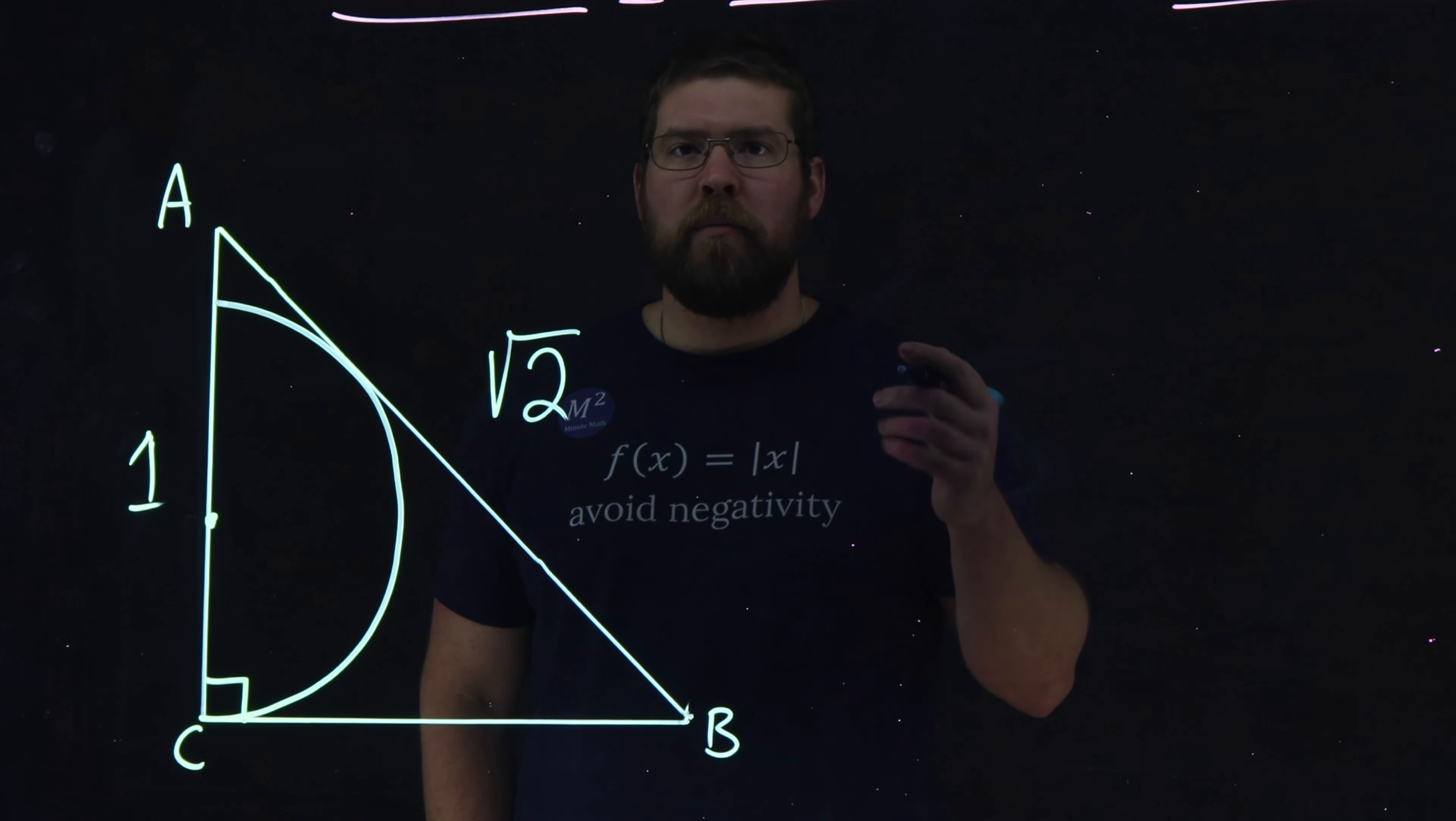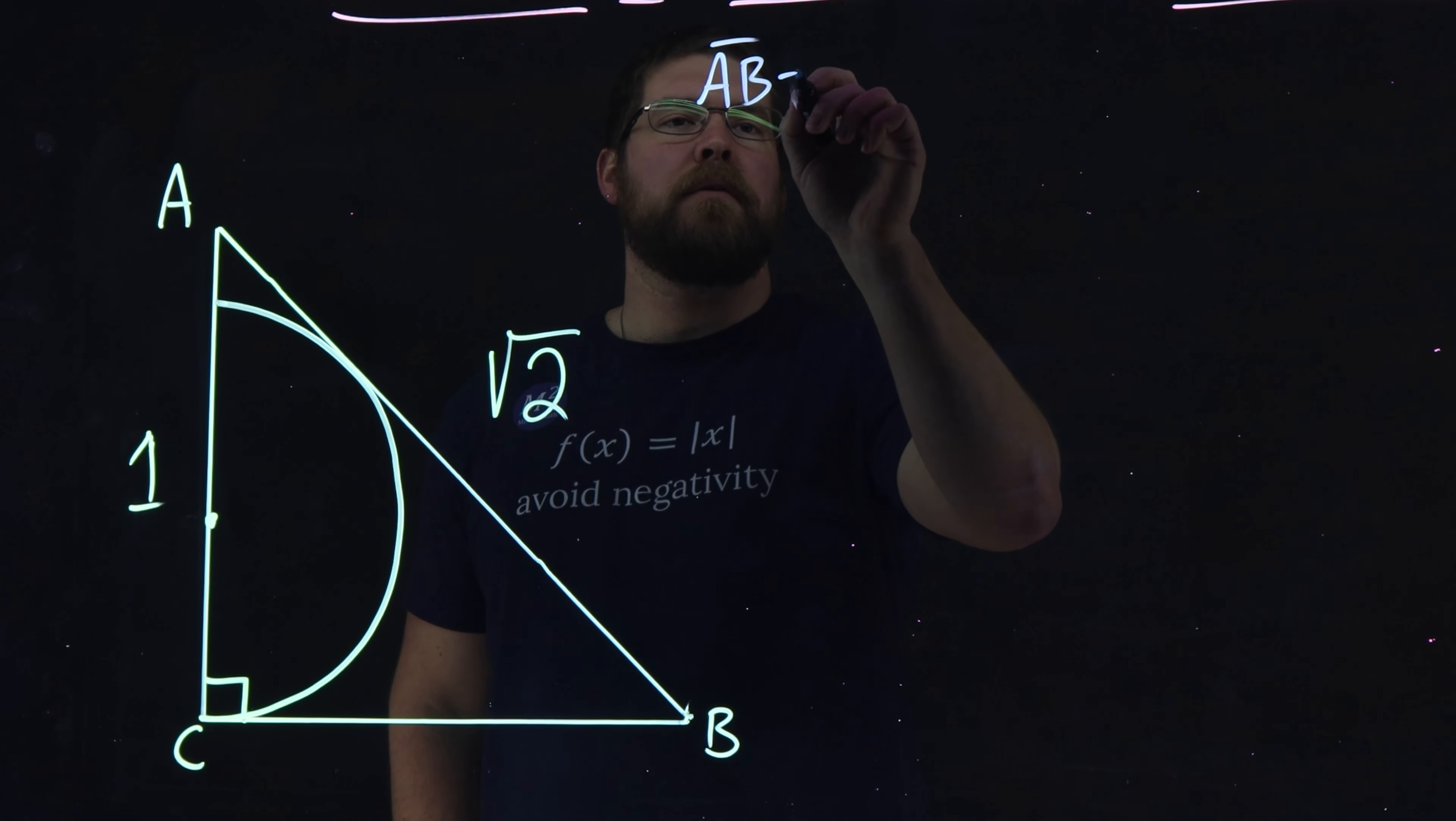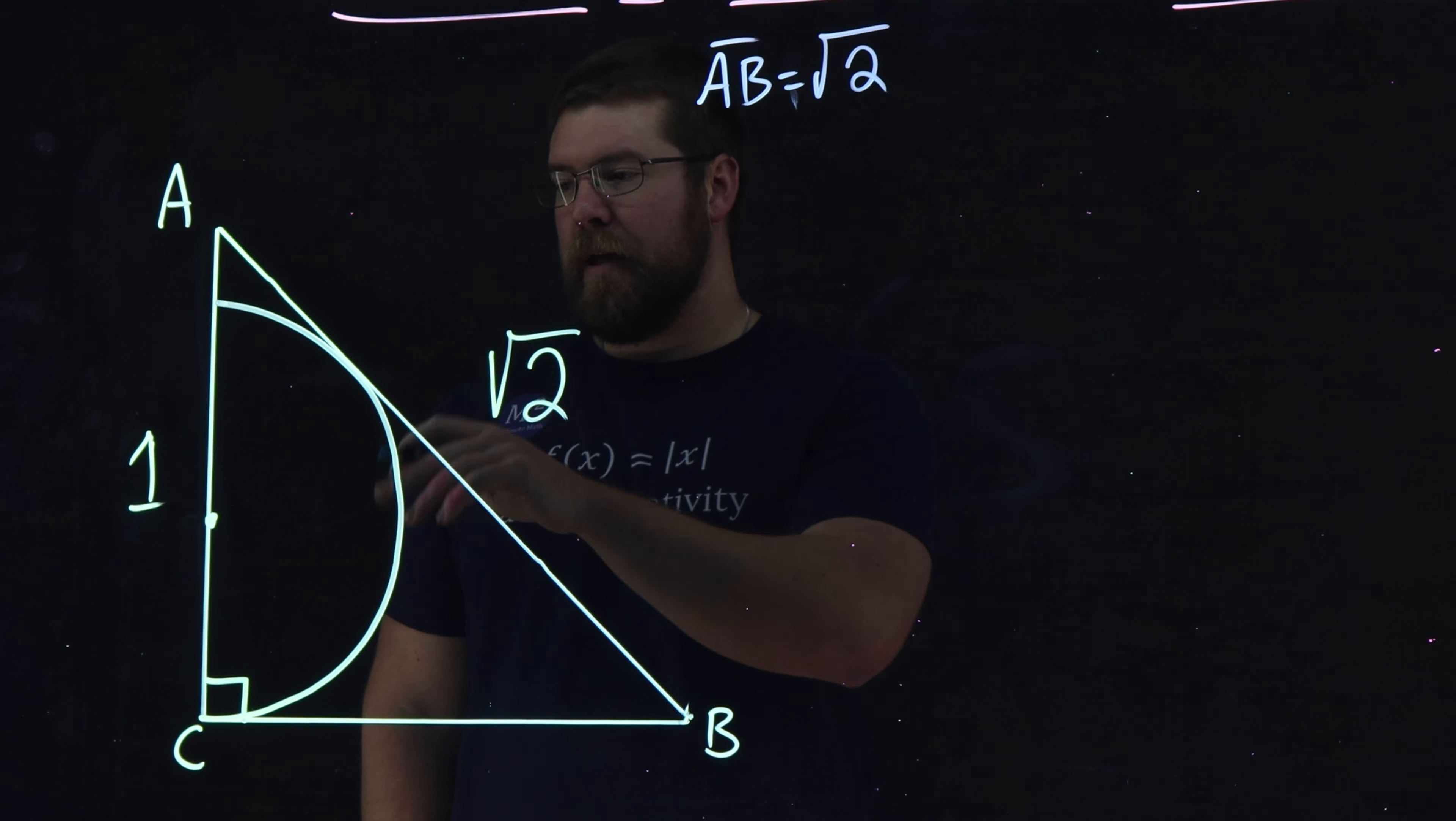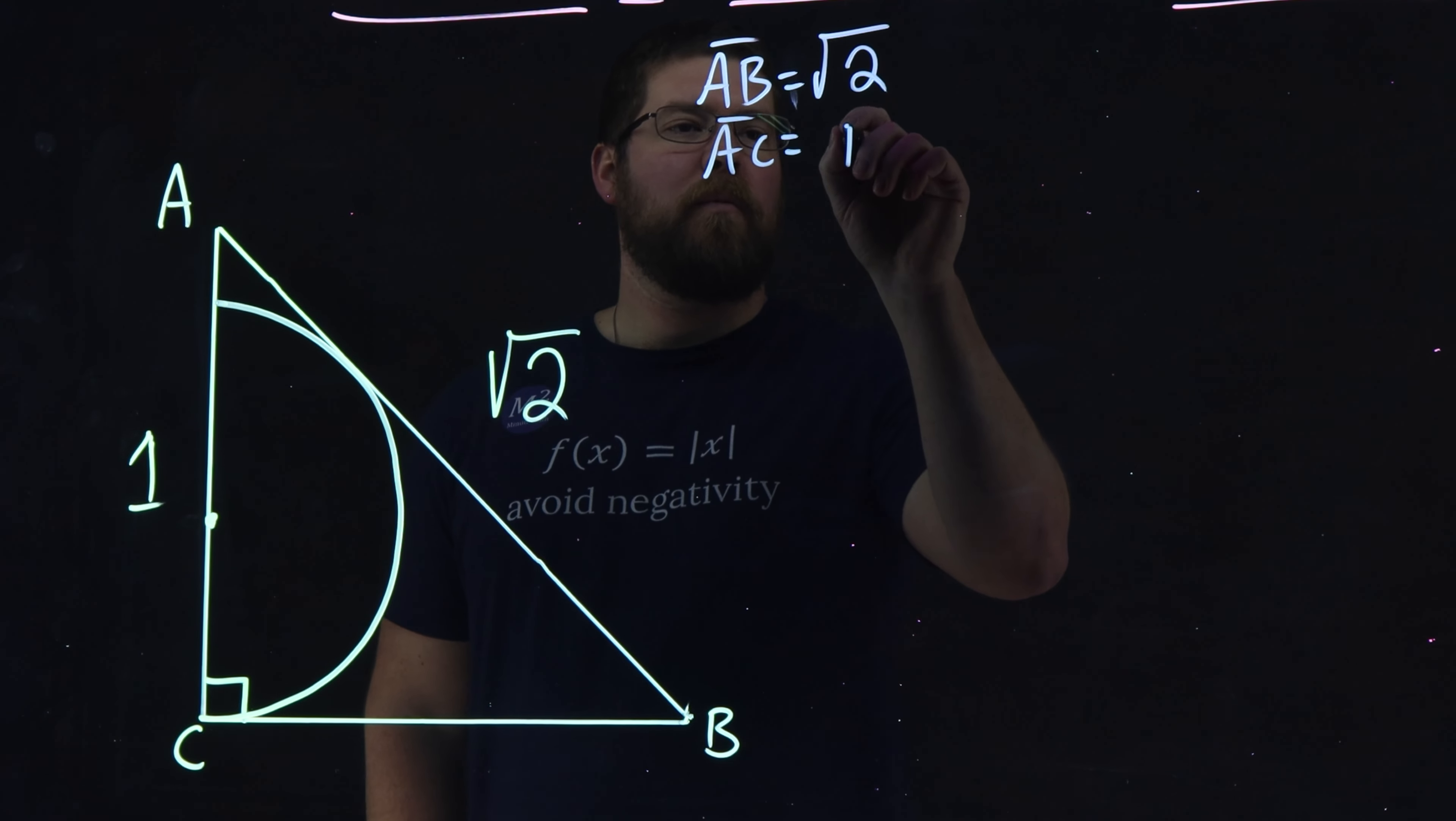First step, let's go write down what we know. The length of AB is the square root of 2. The length of AC is equal to 1.